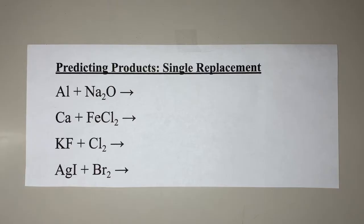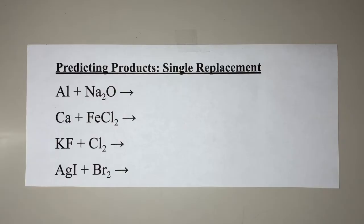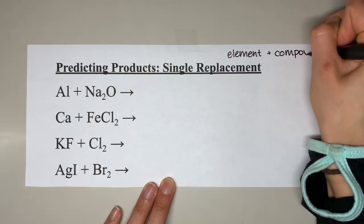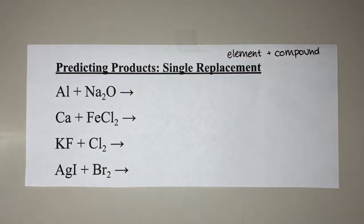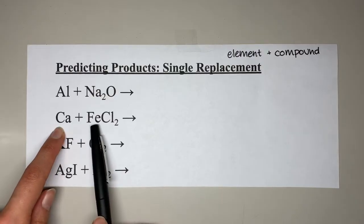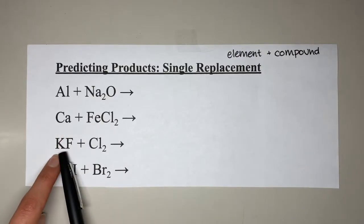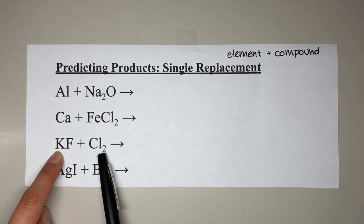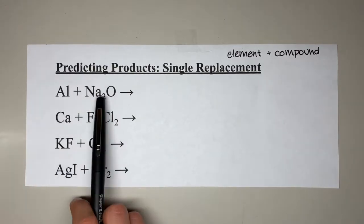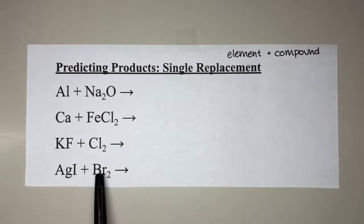Let's start with some practice problems — we have four today. First, we want to recognize the pattern of a single replacement reaction based on just the reactants: an element reacting with a compound. Going through each: aluminum is our element, sodium oxide is our compound; calcium is our element, iron chloride is our compound; potassium fluoride is our compound, chlorine gas is our element; silver iodide is our compound, bromine is our element.